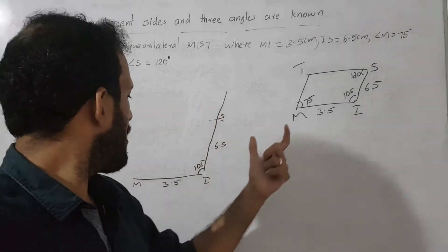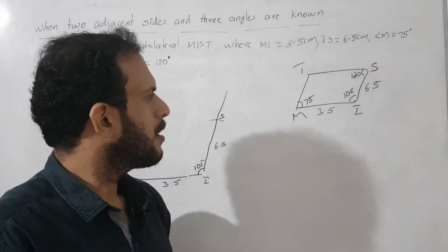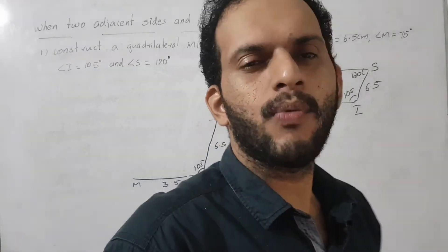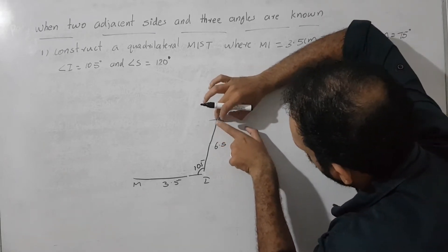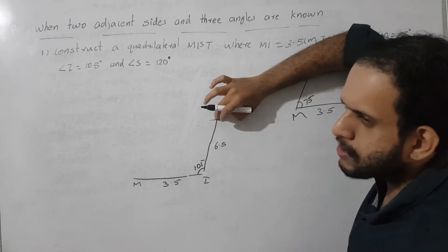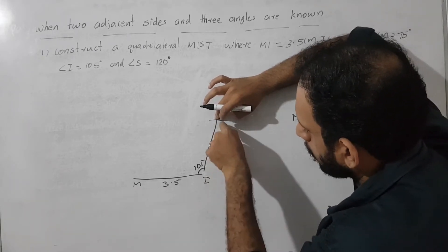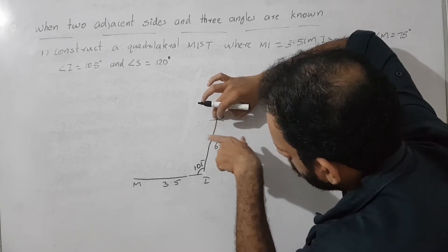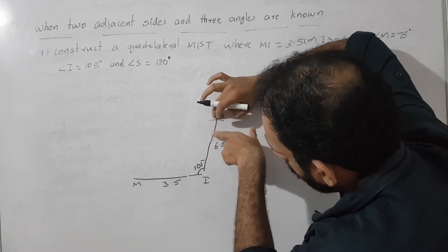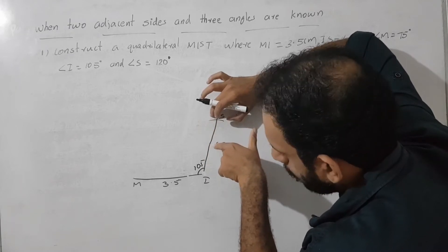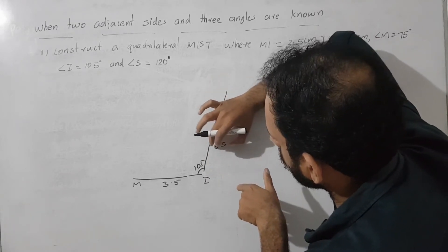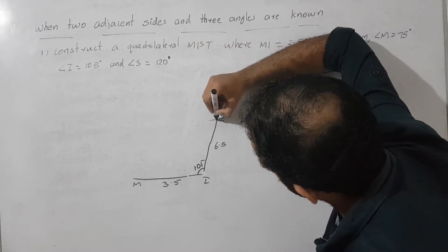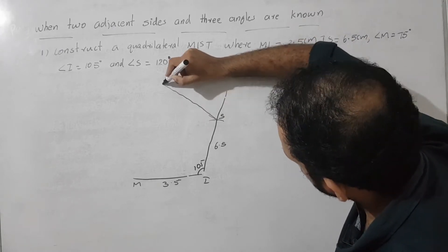We still need to construct two more angles — the angle value on M and the angle value on S. Next, we construct the angle value on S, which is 120°. We keep the protractor with the middle on S. We need to construct on this side of the quadrilateral, so we start counting from this side: 0, 90, 100, 120. We mark 120° and draw a line.